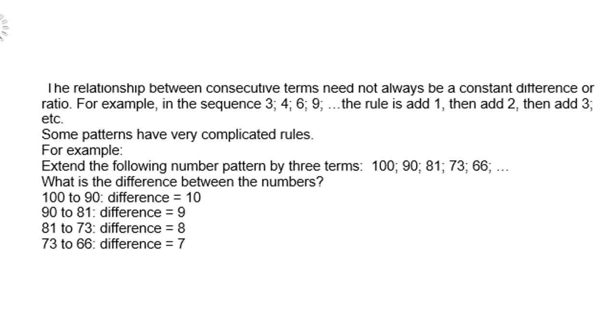The relationship between consecutive terms need not always be a constant difference or ratio. For example, in the sequence 3, 4, 6, 9, the rule is add 1, then add 2, then add 3, etc. Some patterns have very complicated rules.